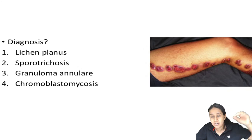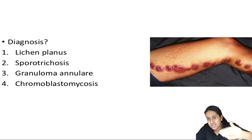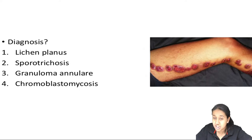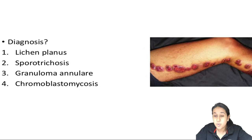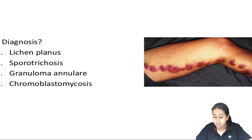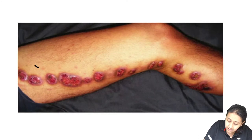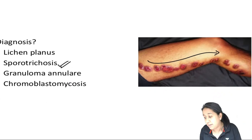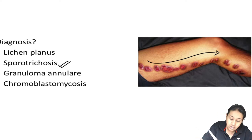You have an image which shows linear lesions with ulcerations present in a linear pattern. This is a very classical example of sporotrichosis. Sporotrichosis occurs secondary to Sporothrix schenckii. It enters the lymphatics and causes lymphangitis. Because of spread through lymphatics, you see linear lesions going along the lymphatics - this is the characteristic sporotrichoid pattern seen in patients of sporotrichosis.